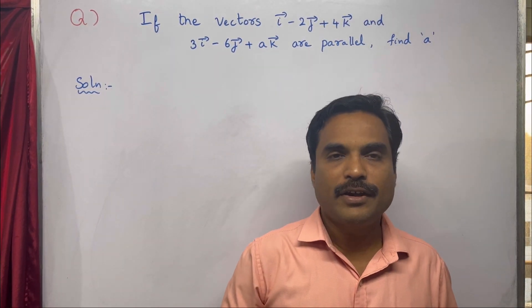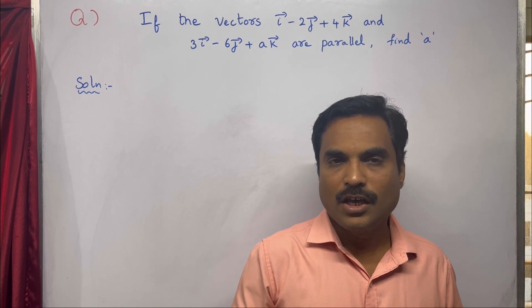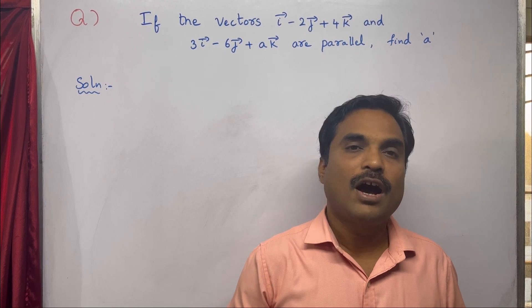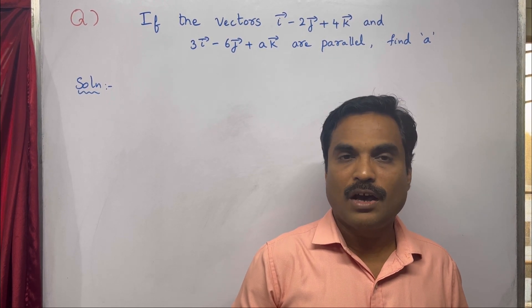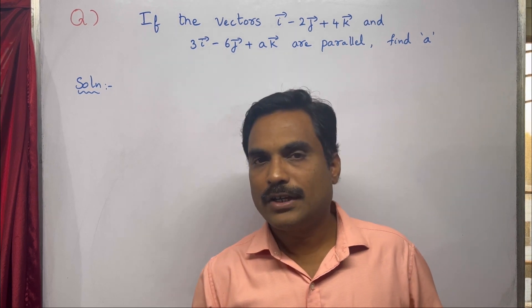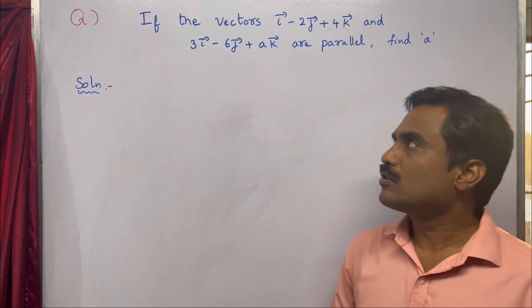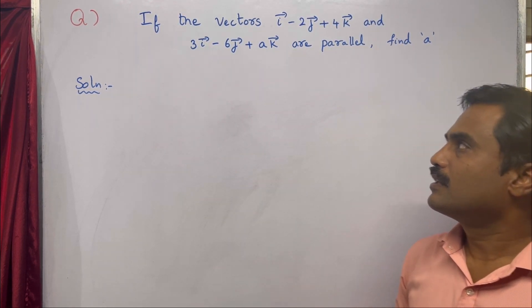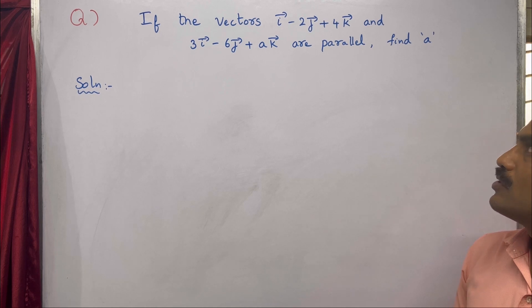Hi dear friends, welcome to my channel. In this new video, I am going to solve a mathematical problem under the topic vector product of vectors. The problem is: if the vectors i̅ minus 2j̅ plus 4k̅